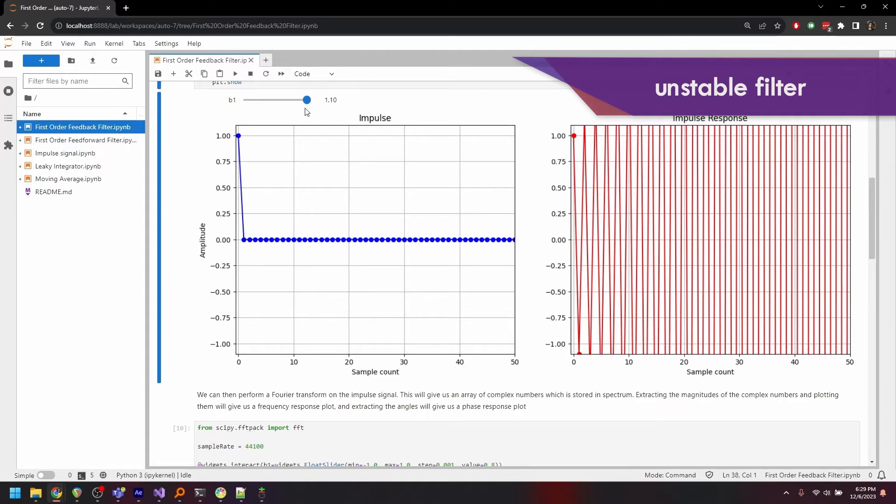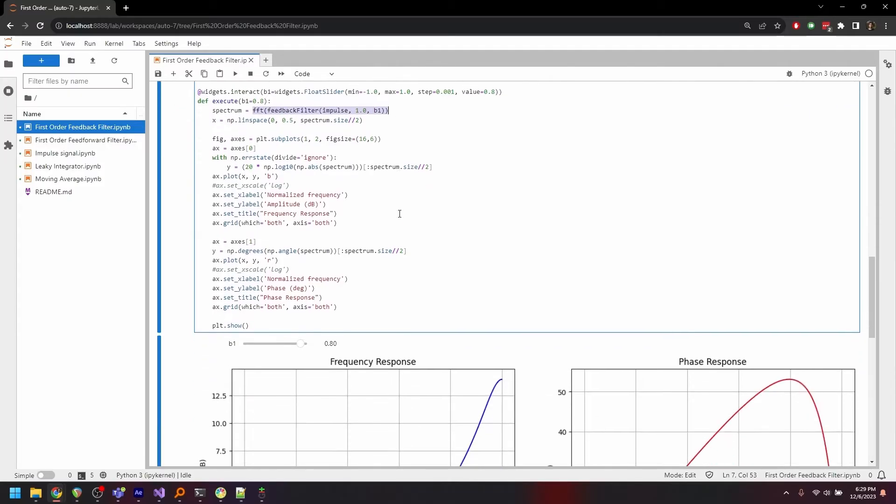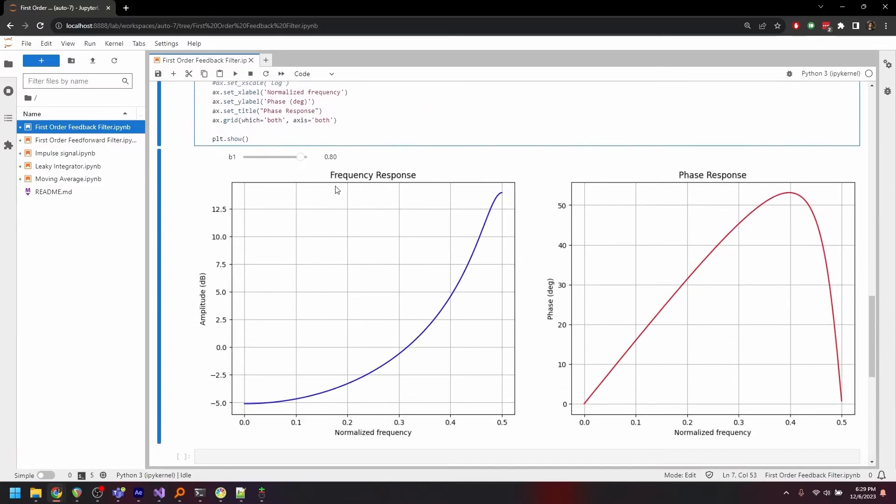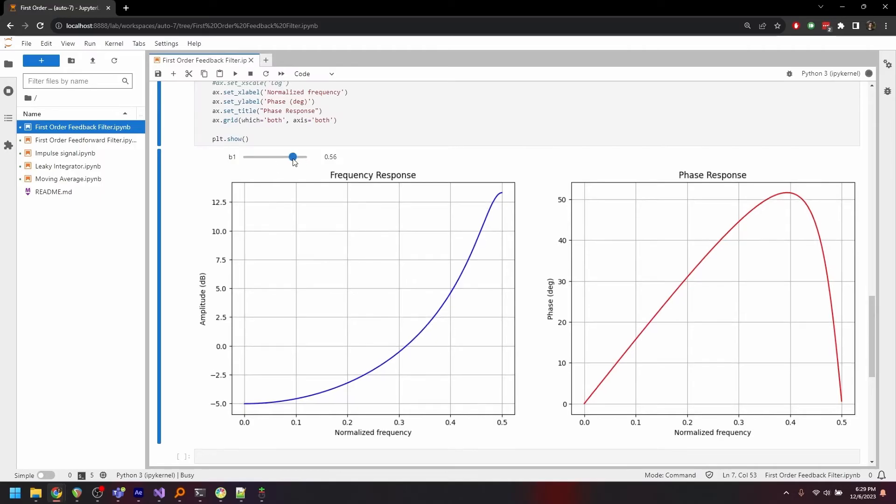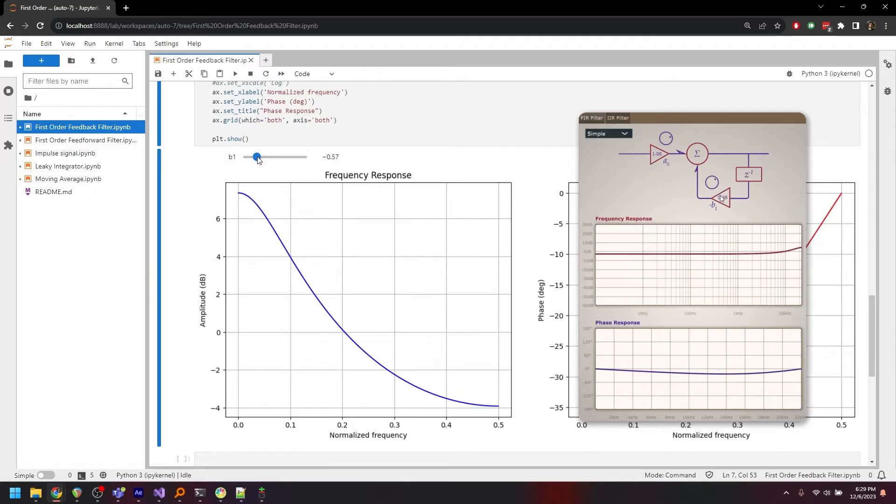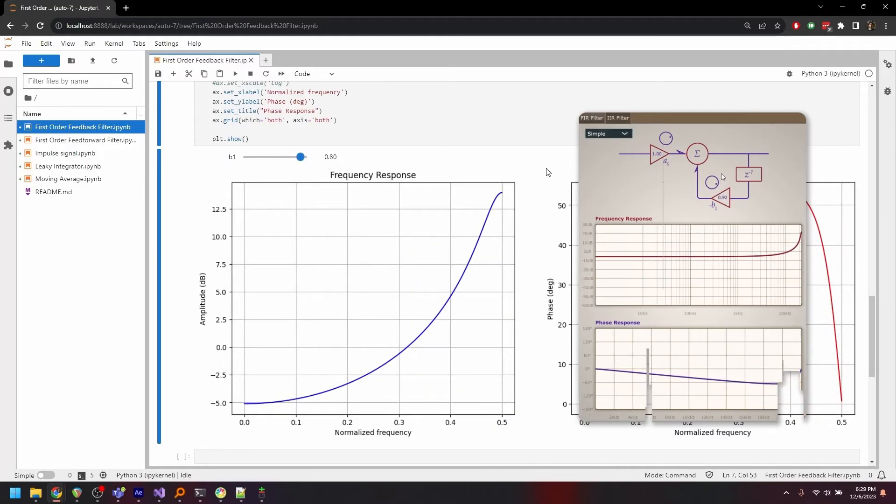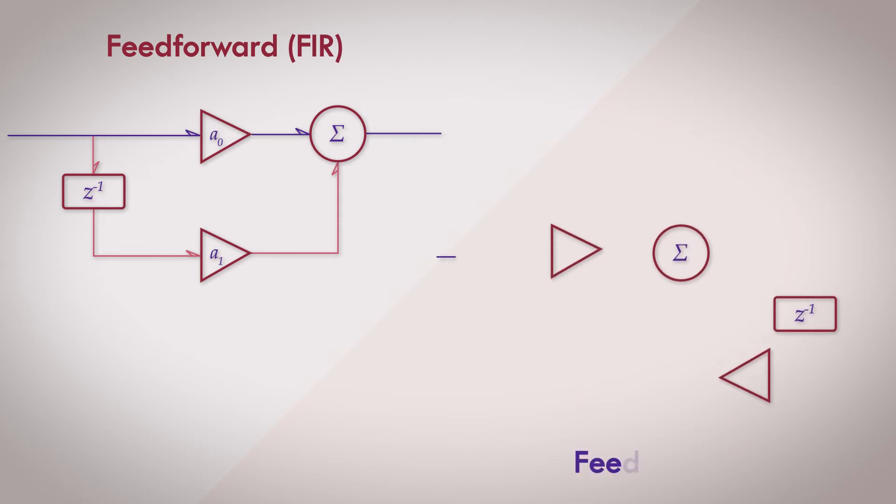We can take the time domain impulse response and subject it to Fourier transformations via the FFT algorithm to observe the frequency and phase characteristics of the signal. And we can play around with the coefficients to see how it affects the frequency and phase response of the filter. We've already looked at this within the JUICE application in the last video, so I'll skip this part. Now let's talk about a fundamental difference between the behavior of the feedforward and the feedback topologies.